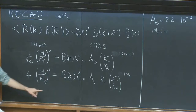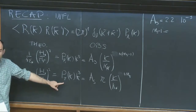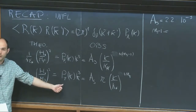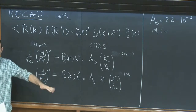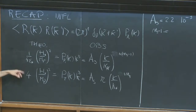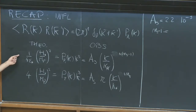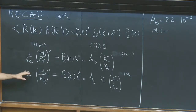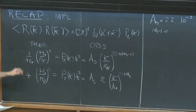We computed the same thing for tensor modes — primordial gravitational waves, also produced by quantum fluctuations. They are pretty much related because both behave like a scalar field, but the tensor action had an epsilon in front, so you get epsilon out in the final formula, with some factors of four.